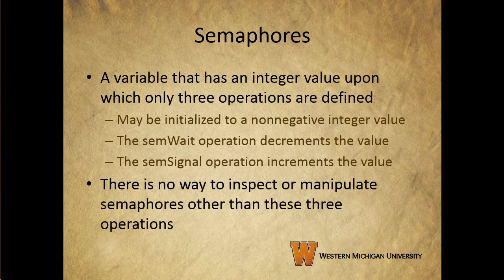Other than those three operations, there's no way to inspect or manipulate semaphores. When we use semSignal and increment the semaphore value, if the semaphore is at a negative value, that means there are processes waiting — processes that have been blocked. The negative number gives us a count of how many processes are blocked and waiting for the signal to continue operation.